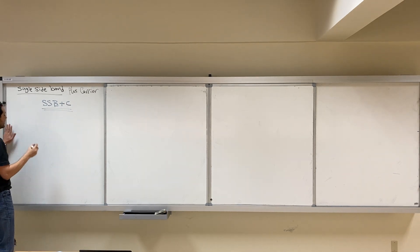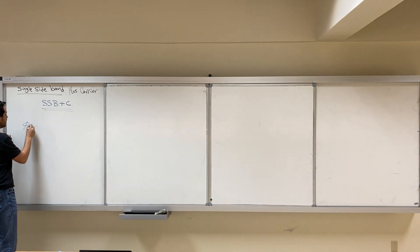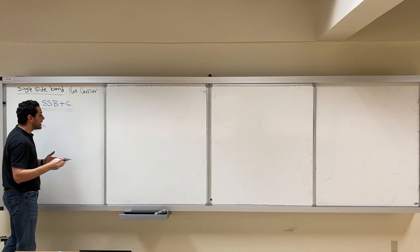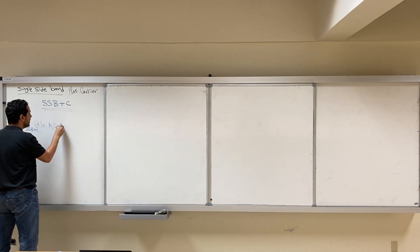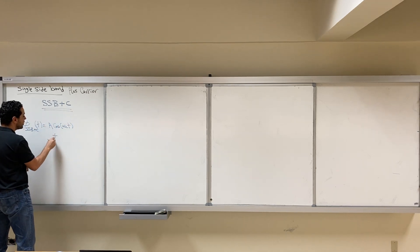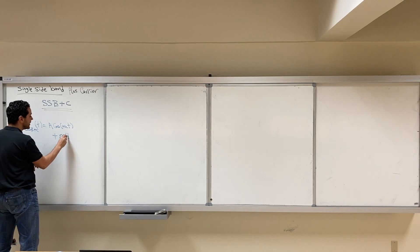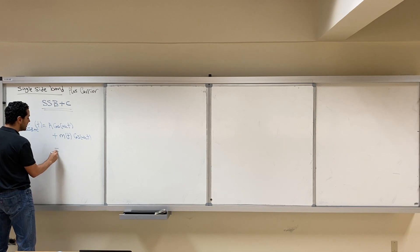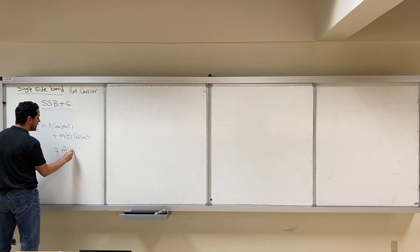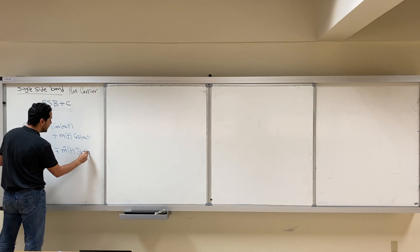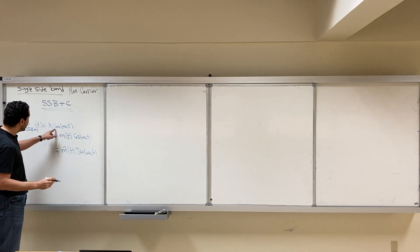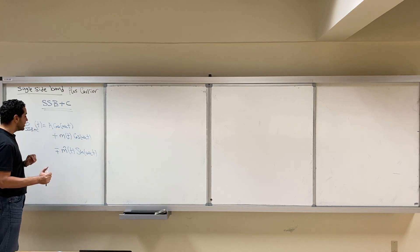In this case, our single sideband signal will add a component for the carrier. We add A cosine(ωc·t) plus the regular single sideband, which is M(t)·cosine(ωc·t) plus or minus M̂(t)·sine(ωc·t). So it's the same single sideband signal, but we added a carrier component with amplitude A.